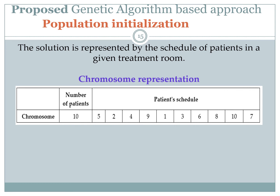In our proposed algorithm, the solution is represented by the schedule of patients in a given treatment room. To illustrate the structure of the solution — also called the chromosome in genetic algorithms — we take the example of 16 patients to be scheduled in three treatment rooms. In this case, ten patients are assigned to the first treatment room at time T. A chromosome in this example represents the schedule of those ten patients in the given treatment room in the time period T.